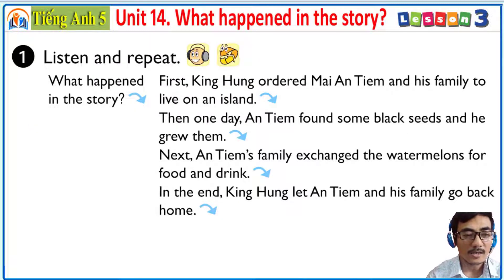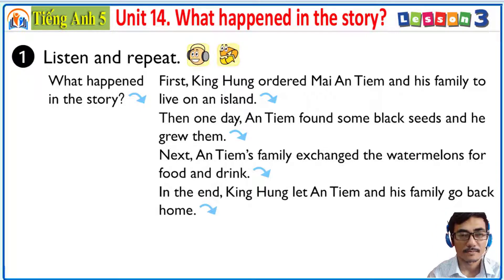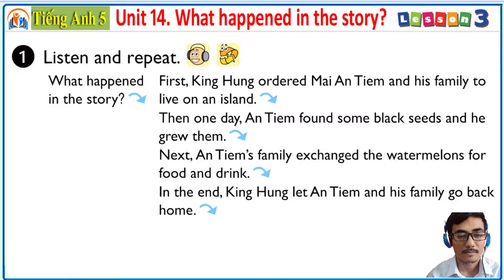Activity 1: Listen and repeat. Now, you look at your book and listen. What happened in the story? First, King Hong ordered Mai An Tian and his family to live on an island. Then one day, An Tian found some black seeds and he grew them. Next, An Tian's family exchanged the watermelons for food and drink. In the end, King Hong let An Tian and his family go back home.